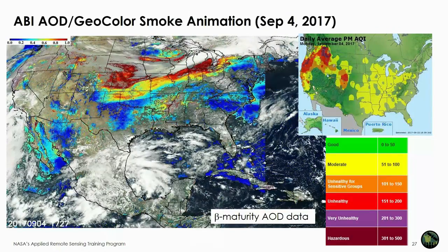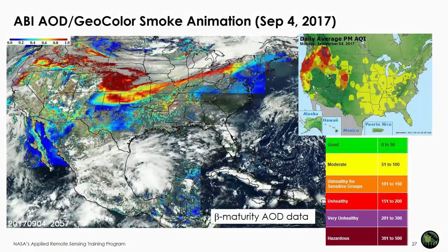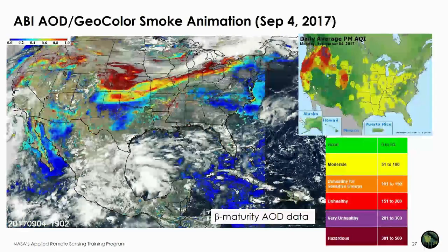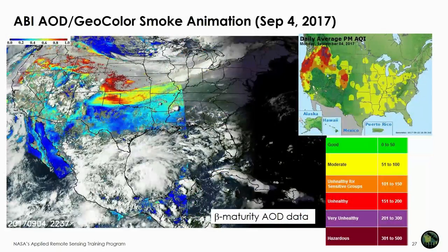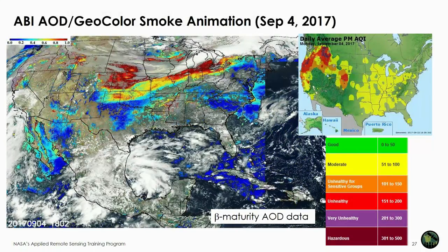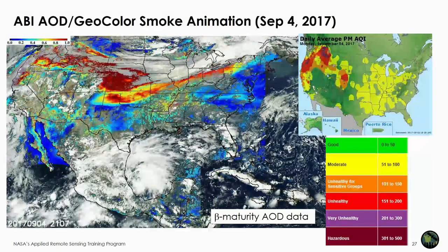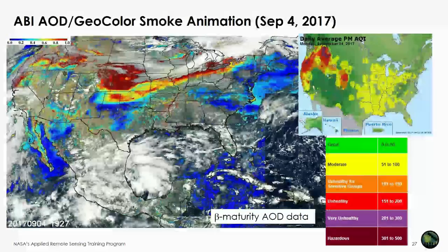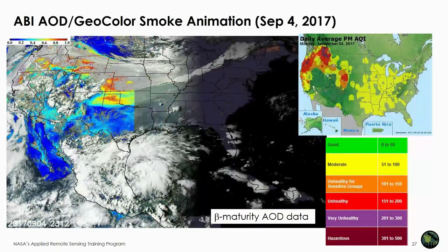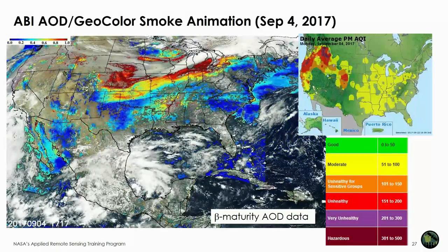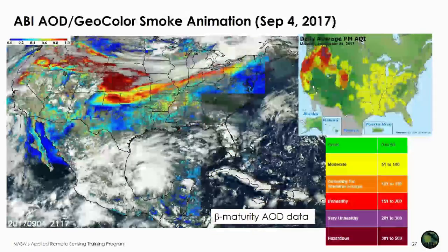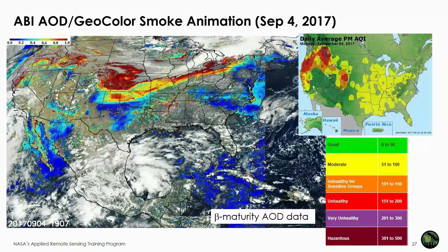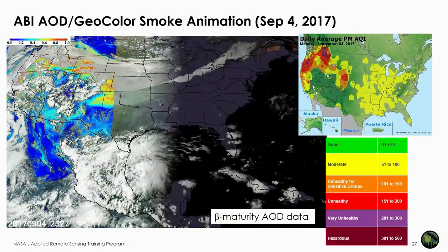This animation shows geocolor and AOD observations for September 4th, 2017. The daily average observed PM 2.5 index shows a broad area of code orange, red, and purple air quality corresponding to thick smoke. Though the AOD data were still beta maturity with some missing data and flickering, the key takeaway is the high temporal and spatial resolution — we can see smoke plume transport and movement across the continental US, resolving fine features of the smoke plume. This is totally unprecedented compared to what the legacy GOES imager provided.